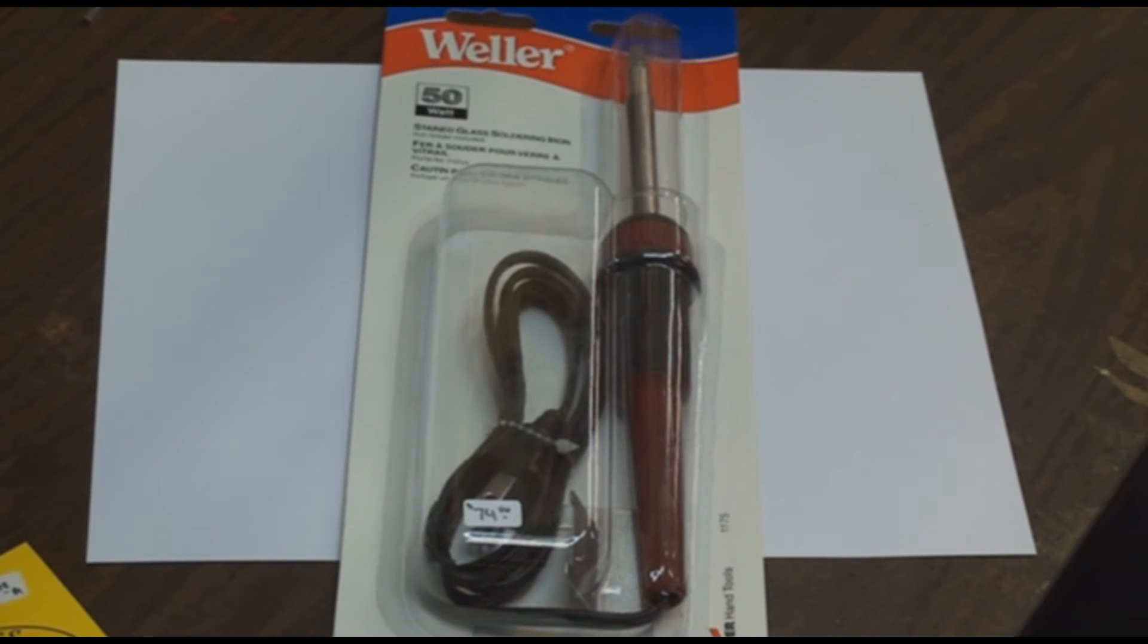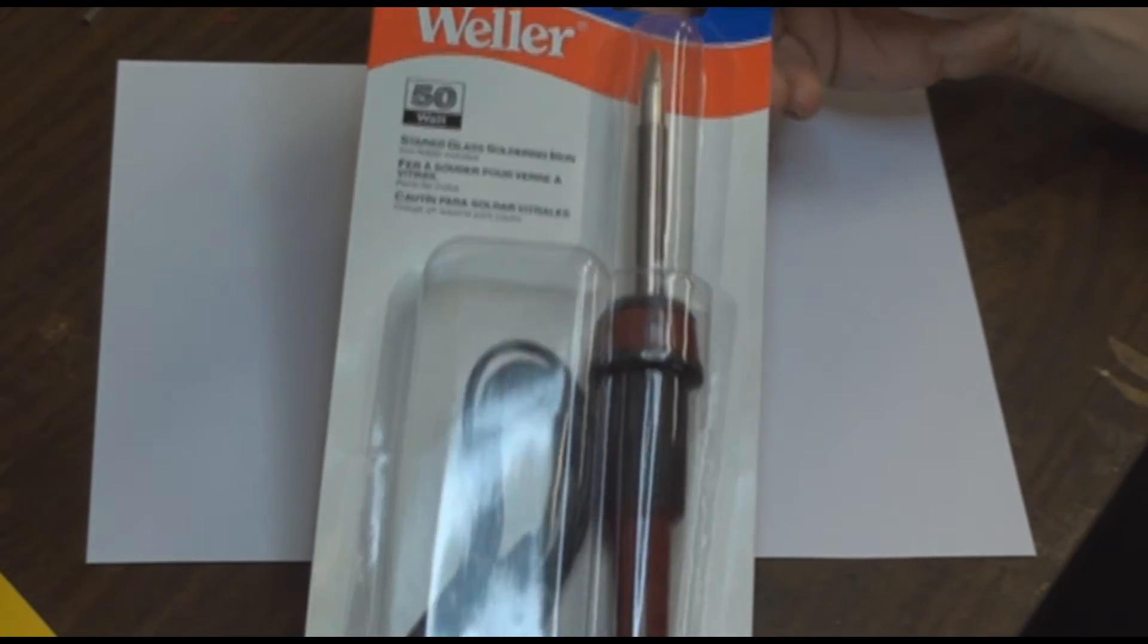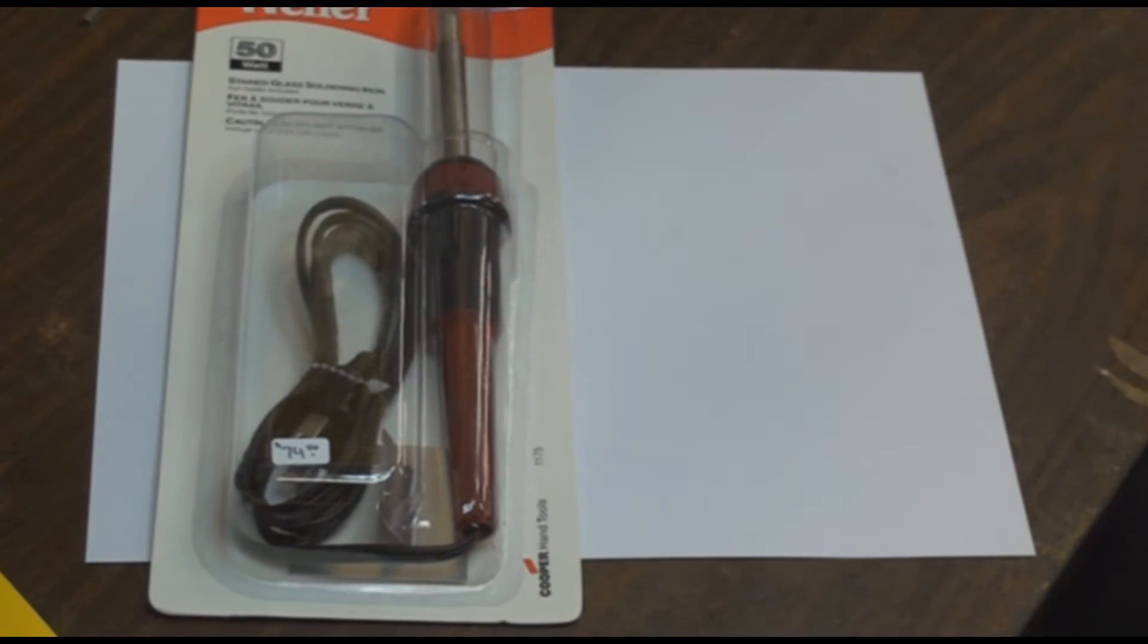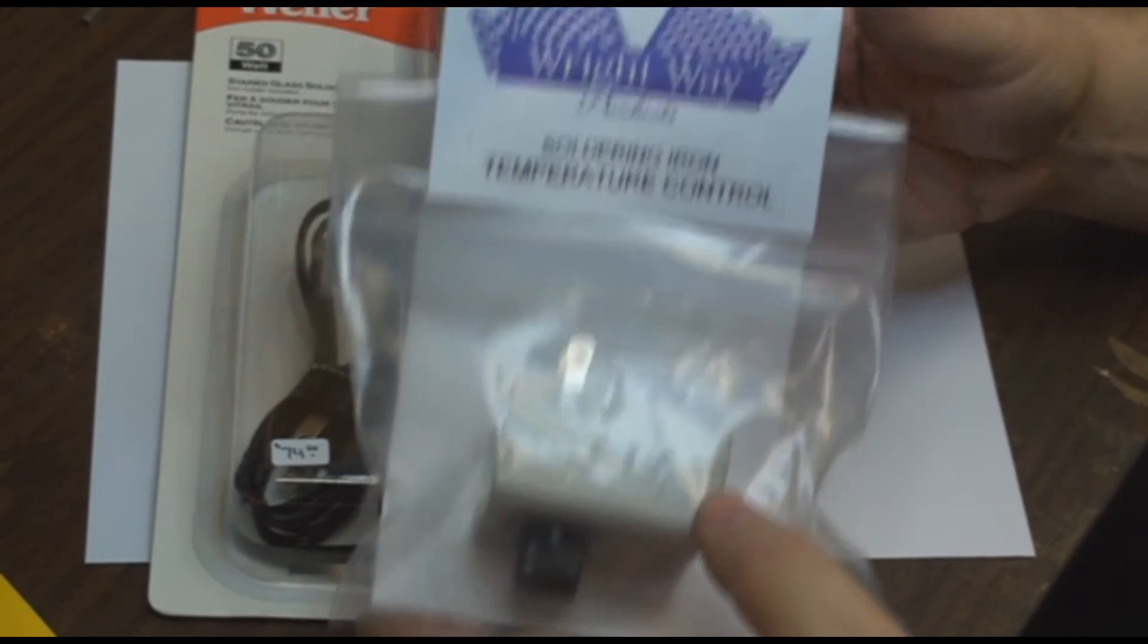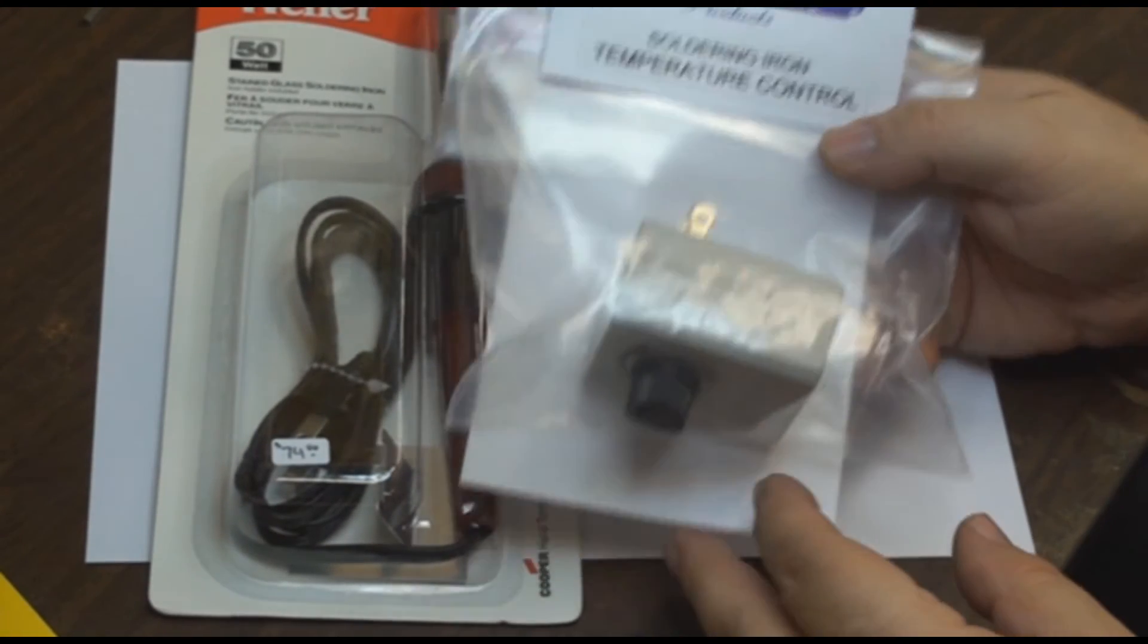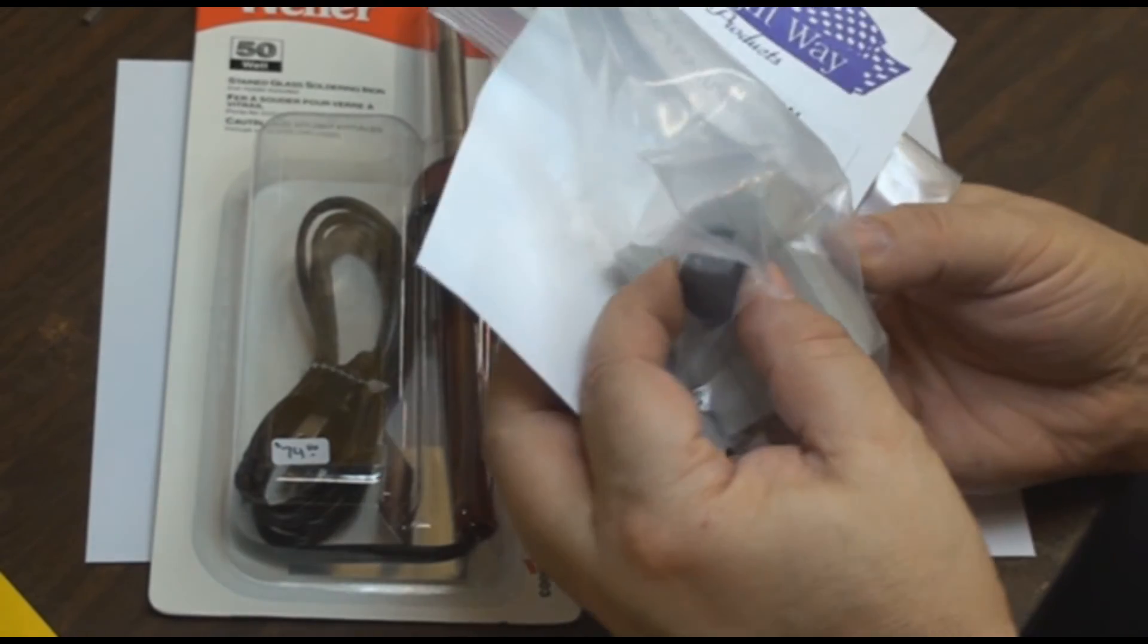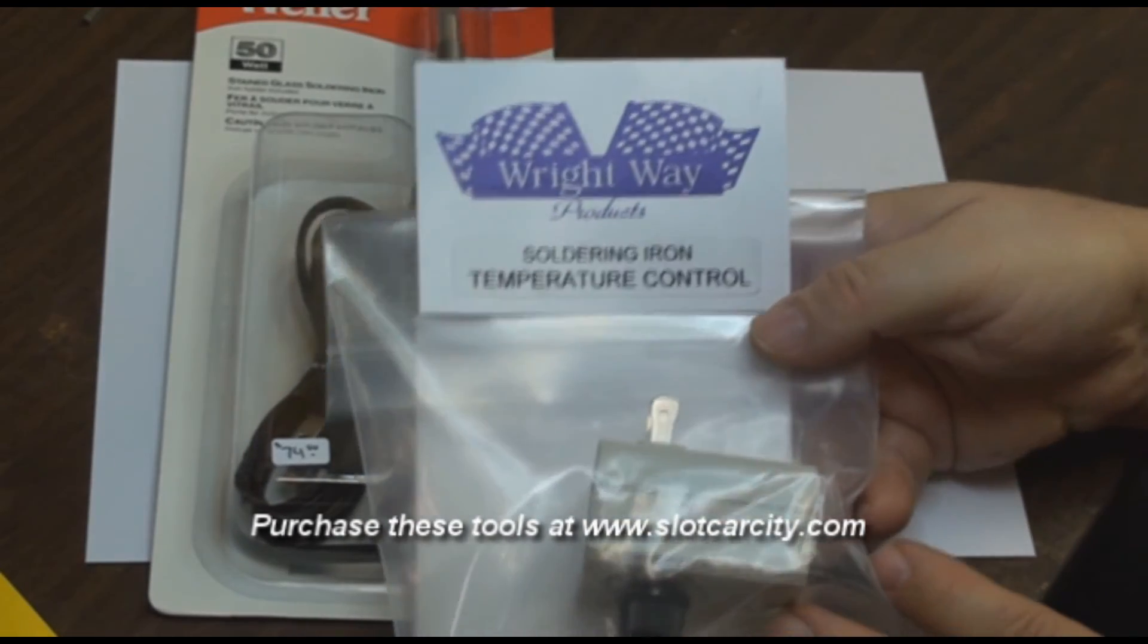Some of the other tools, if you don't have one already, we recommend the Weller Soldering Iron Stained Glass Window 50-Watt Soldering Iron. Now to control that, we sell a Soldering Iron Temperature Control. You can dial down to do your lead wires, shunt wires, turn it back up. Nice little dial right here to solder in like the motors into the chassis and what have you.